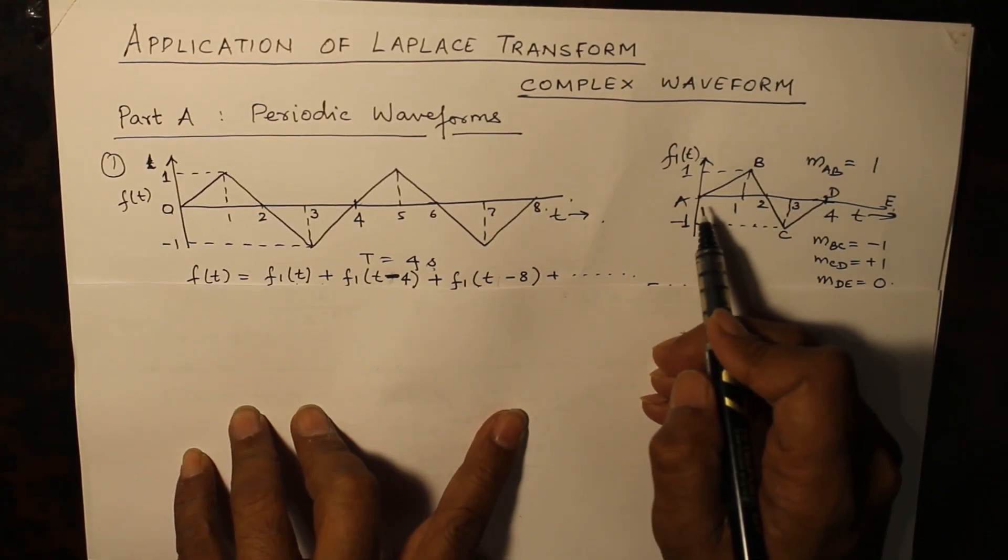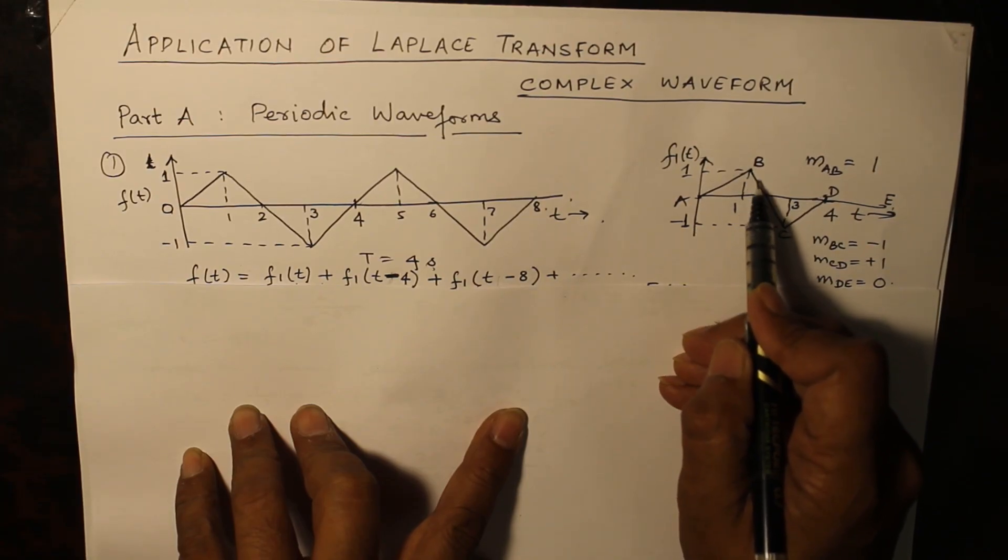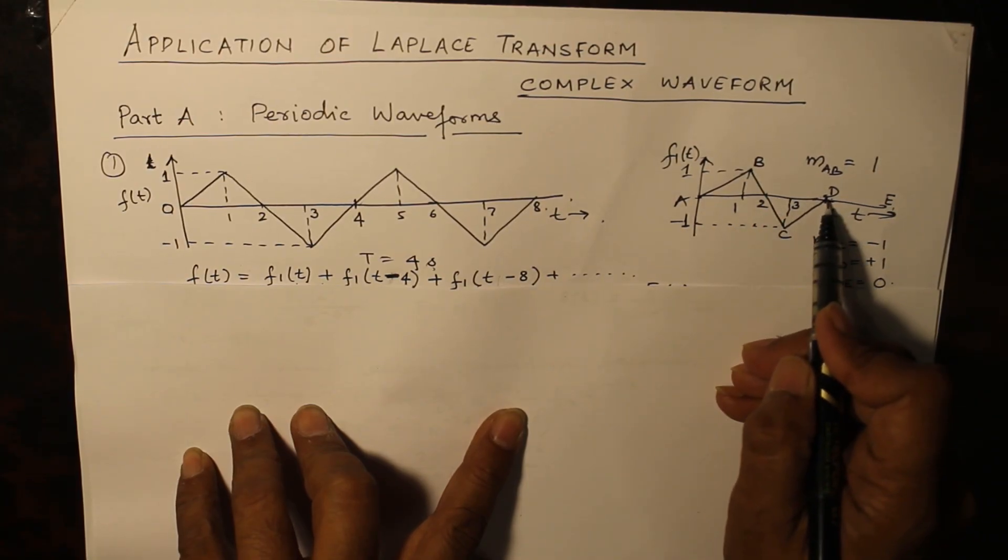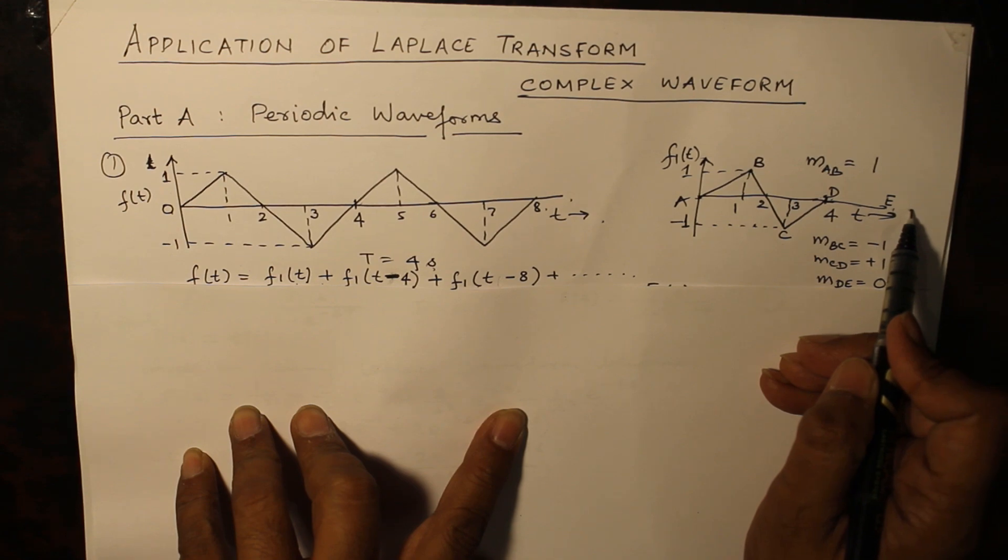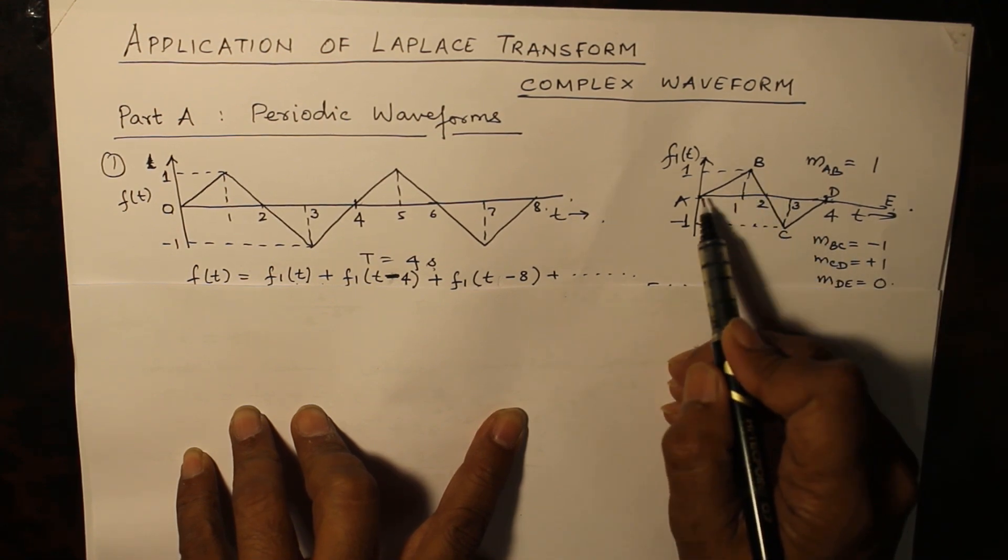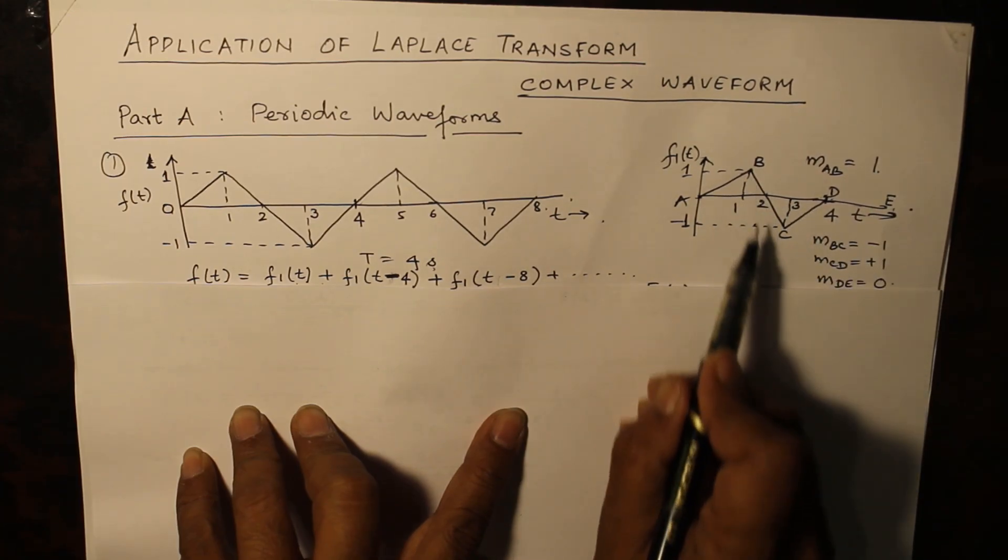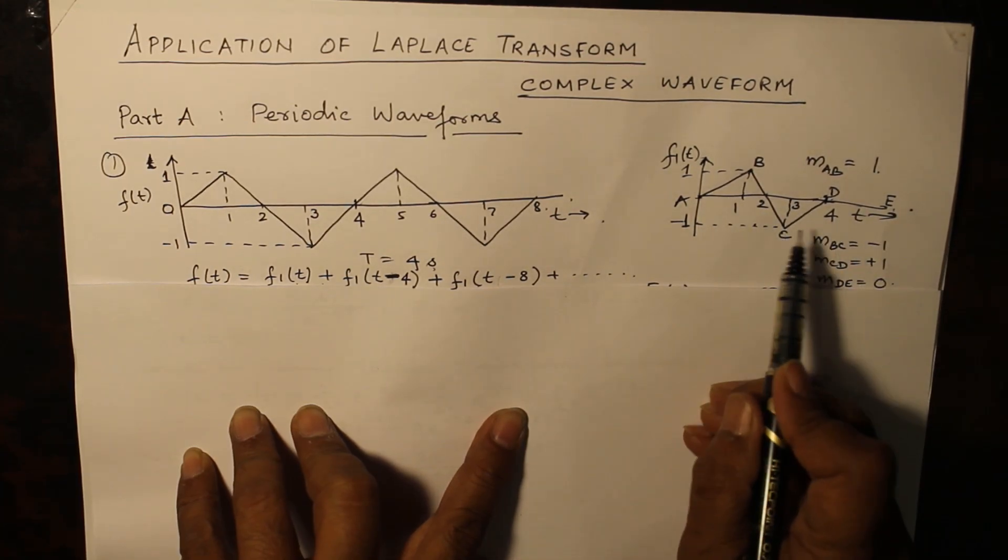Now let us see what is f1(t). f1(t) is a waveform constituted of line segments AB, BC, CD, and then flat D. The slope of AB is (1-0)/(1-0) which gives you 1. The slope of BC is (-1-1)/(3-1) which gives you minus 1.